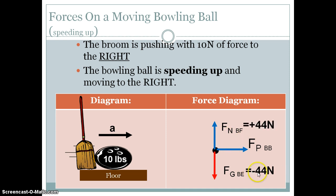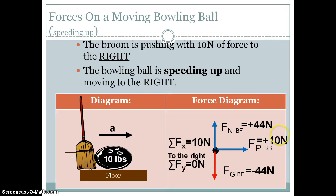The force of gravity is negative 44 newtons, the normal force is positive 44 newtons, and the pushing force is positive 10 newtons because right is positive in our horizontal convention. Looking at the sum of the forces in the y direction, it's still zero — positive 44 plus negative 44. In the x direction there is one force to the right, so the sum of the forces equals 10 newtons. We can see that the sum of the forces points to the right and the ball has an acceleration to the right.